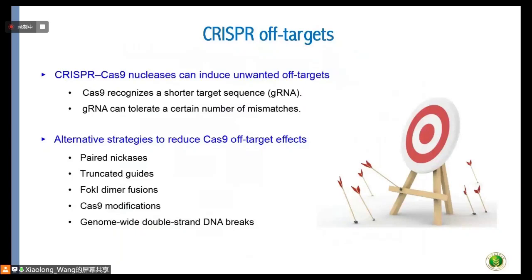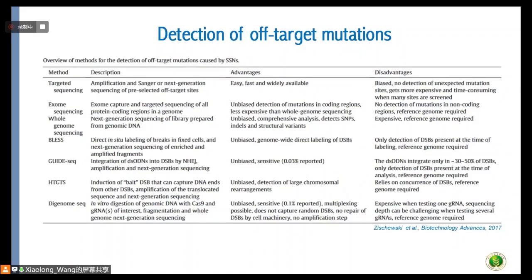When applying this technology in agriculture, especially in farm animals, people are more concerned about off-targets in addition to targeting efficiency. Off-targets introduce unwanted mutations in the genome. Since Cas9 can recognize short target sequences, guide sequences can also tolerate a certain number of mismatches. People have developed a number of methods to reduce off-target effects, such as paired nickases and truncated guide RNAs using a FokI dimer, and modifications of Cas9. A number of methods have also been developed to detect off-target mutations, especially targeted sequencing and whole-genome sequencing.